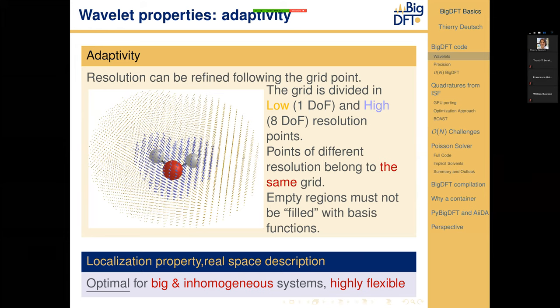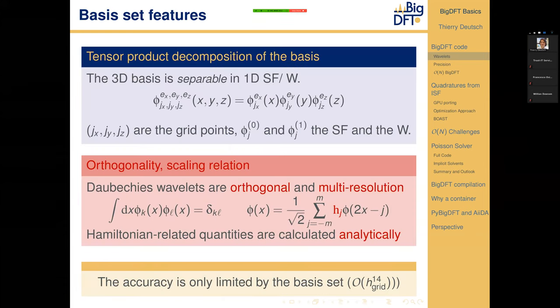Automatically, the program defines a spherical region around each atom — as shown in the water molecule example — where the eight functions will be kept, then a second region with only one function per grid point. Apart from regions defined by spheres centered on the atoms, no points are considered, so there is no need for a supercell as in the case of plane waves. To build our 3D basis set, we take the tensor product of either a scaling function or a wavelet in the x, y, and z directions, making eight different types of functions. We chose Daubechies wavelets for their orthogonality property.